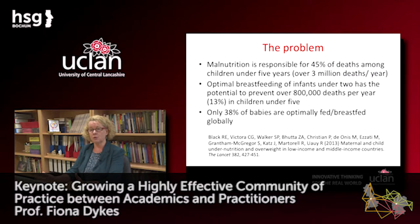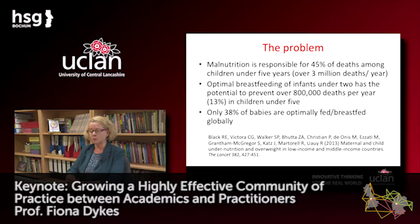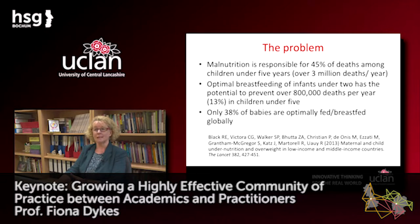Starting with the problem that my unit is engaged with: malnutrition is responsible for 45% of deaths among children under five years — that's over three million deaths per year. Optimal breastfeeding of infants under two has the potential to prevent over 800,000 deaths per year, that's 13% in children under five. Yet only 38% of babies are optimally fed and breastfed globally. This has been highlighted in a recent Lancet series, and this problem is engaging groups and communities of practice from around the world in high, middle, and low income countries.